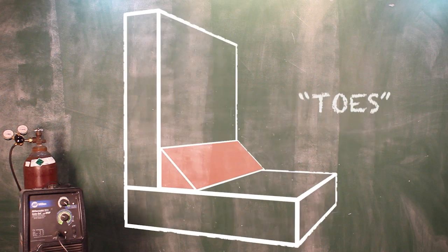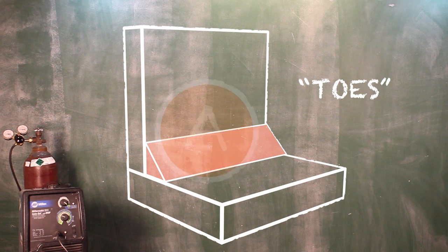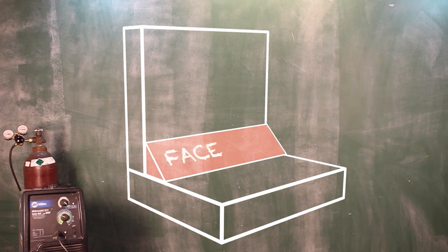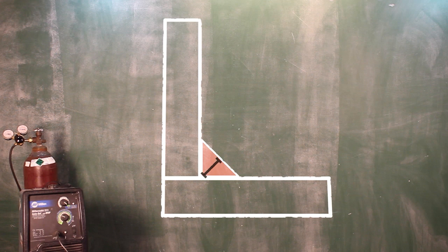The toes of the weld are the two edges that are formed by the puddle, what we have been referring to as the A and C edge so far. In between the two toes, you have your face. And then finally, the distance between the very middle of the face to your root is called the throat.